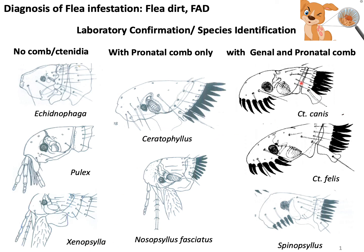It is also important to differentiate Ctenocephalides canis and Ctenocephalides felis, as they are very common. You can identify them based on their genal combs. If the first spine of the genal comb is smaller than the second one, that will be Ctenocephalides canis. If the first and second spine are basically equal, that may be considered Ctenocephalides felis.